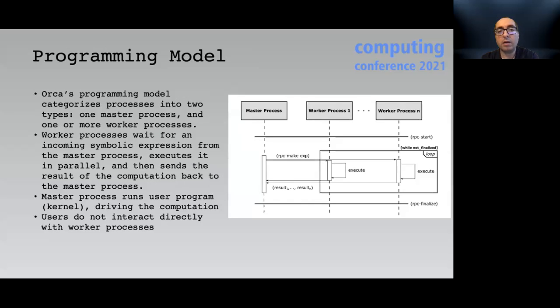Orca's programming model categorizes processes into two types, master process and worker process, such that there is only one master process and multiple worker processes. A worker process typically waits for an incoming symbolic expression from the master process, executes it in its runtime environment, and then sends the result of the computation back to the master process. However, the master process runs a given user program called kernel that master process distributes a symbolic expression among the worker processes.